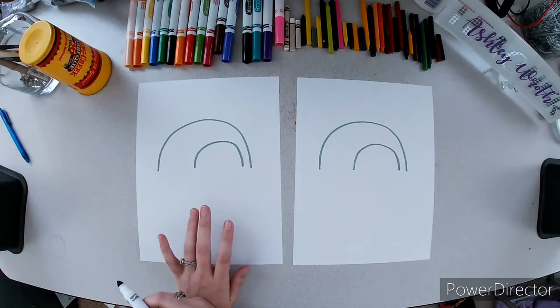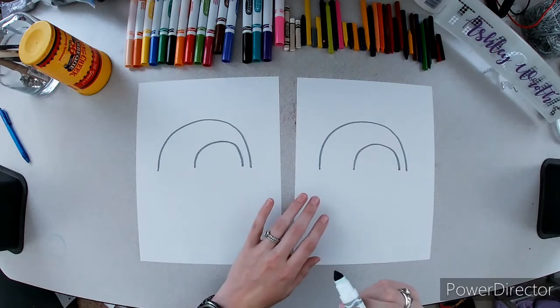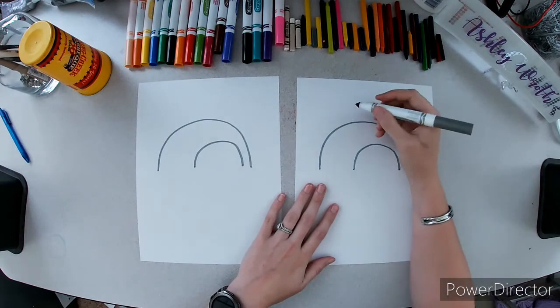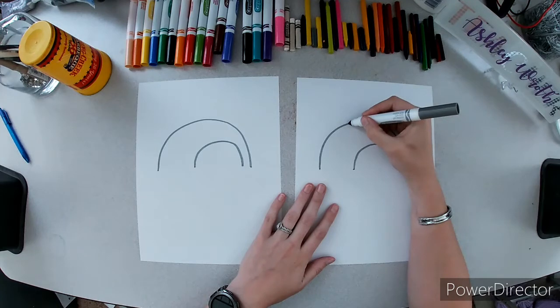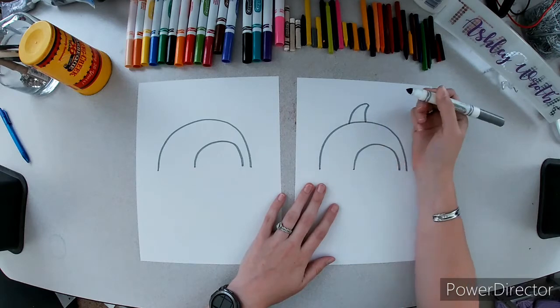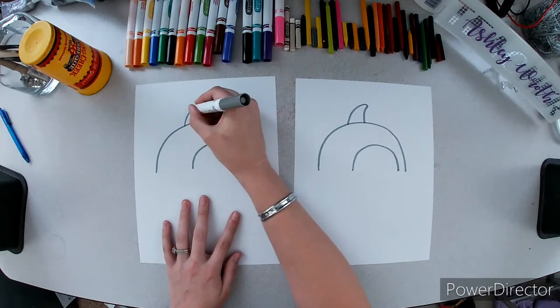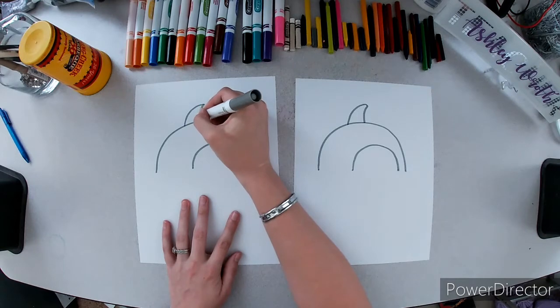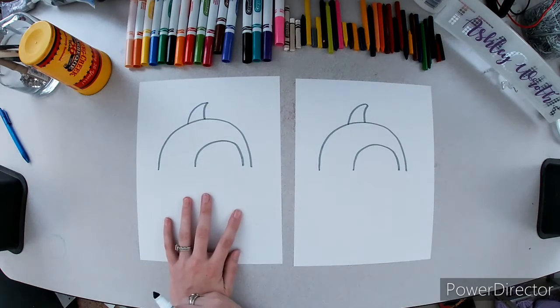Now I'm going to do the dorsal fin. That's the fin on the back. Dolphins have a little bit of a rounder fin and sharks are a little bit more pointy. Just like that.